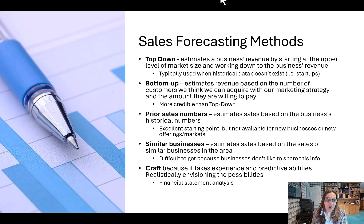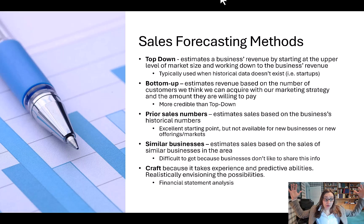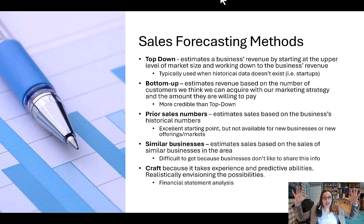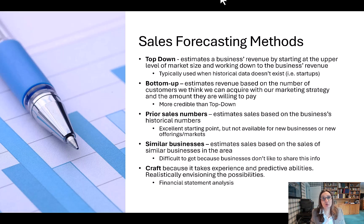In top-down, we're estimating the business's revenue by starting at the upper level of market size and working down into our business revenue. This is typically used when historical data doesn't exist, like with startups.